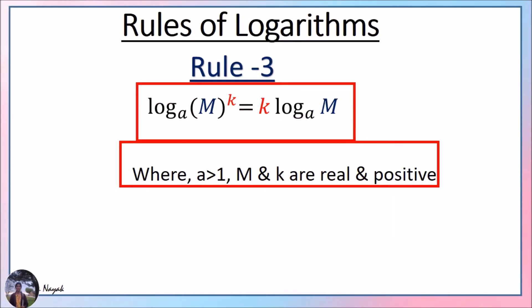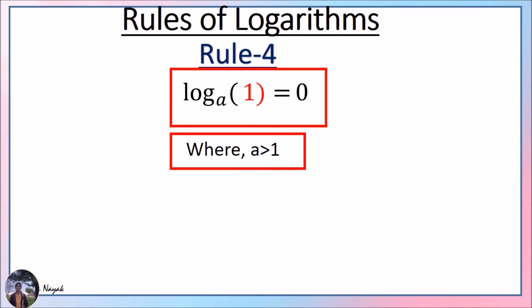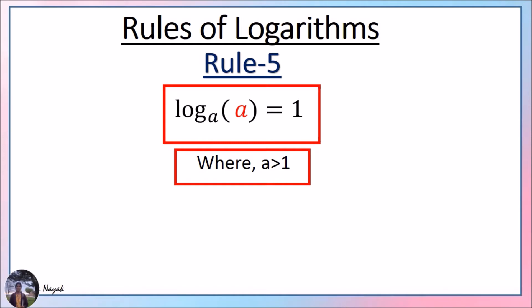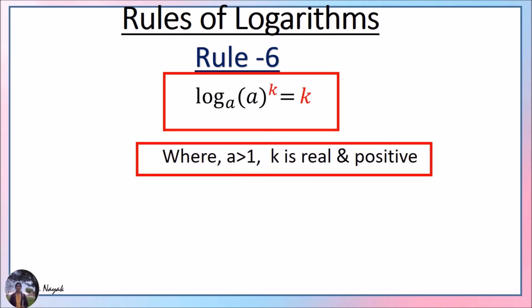Rule 3: Log base a of m raised to the power k equals k times log base a of m — the exponent k comes to the left of the logarithm. Rule 4: Logarithm of 1 in any base equals 0. Logarithm of a base a — that means logarithm of any number to the same base — equals 1. You can verify: a^1 = a, so log base a of a equals 1. Also, log base a of a^k equals k.